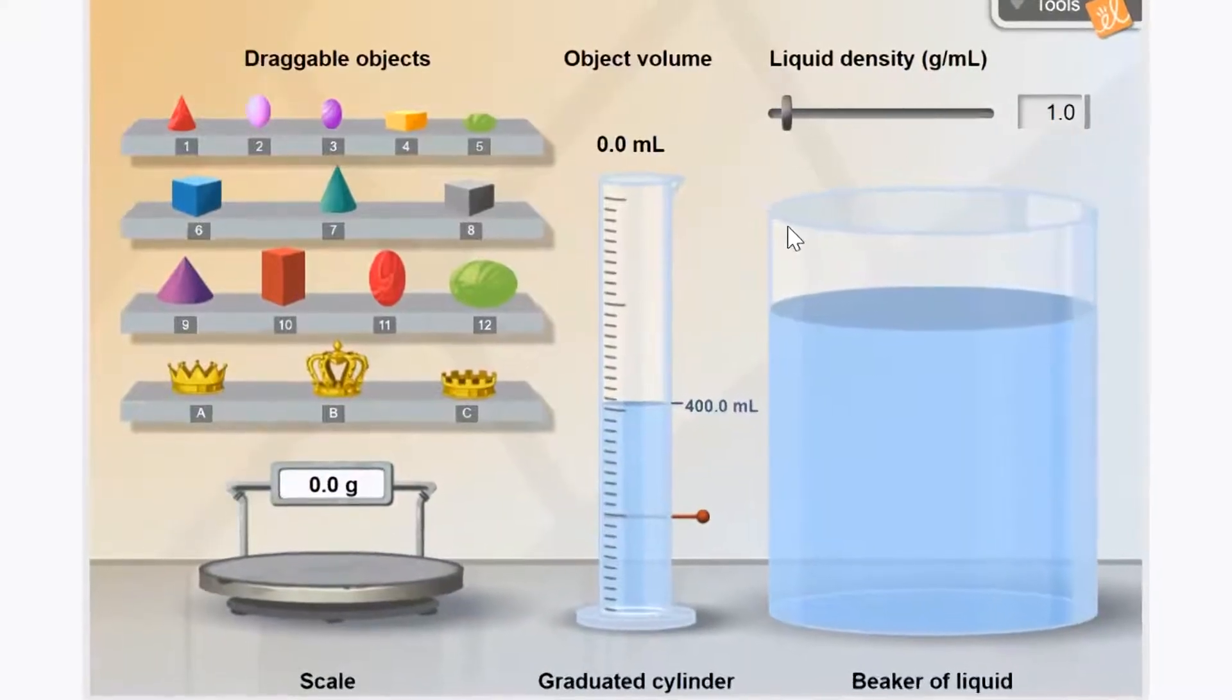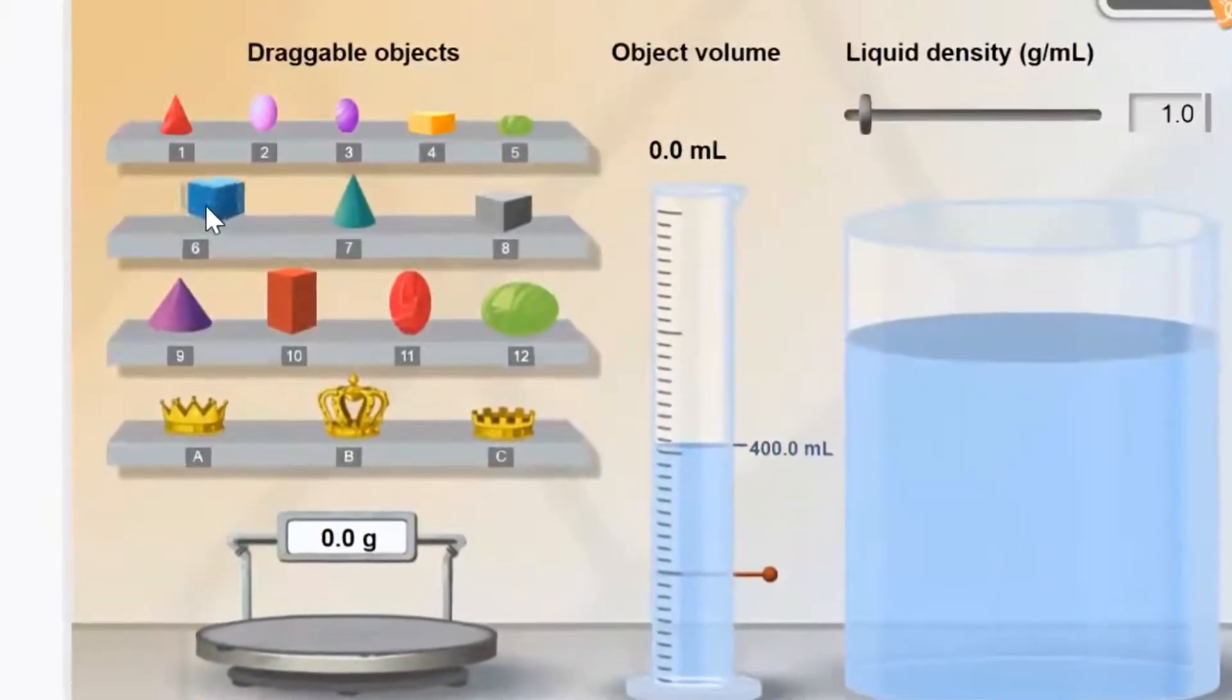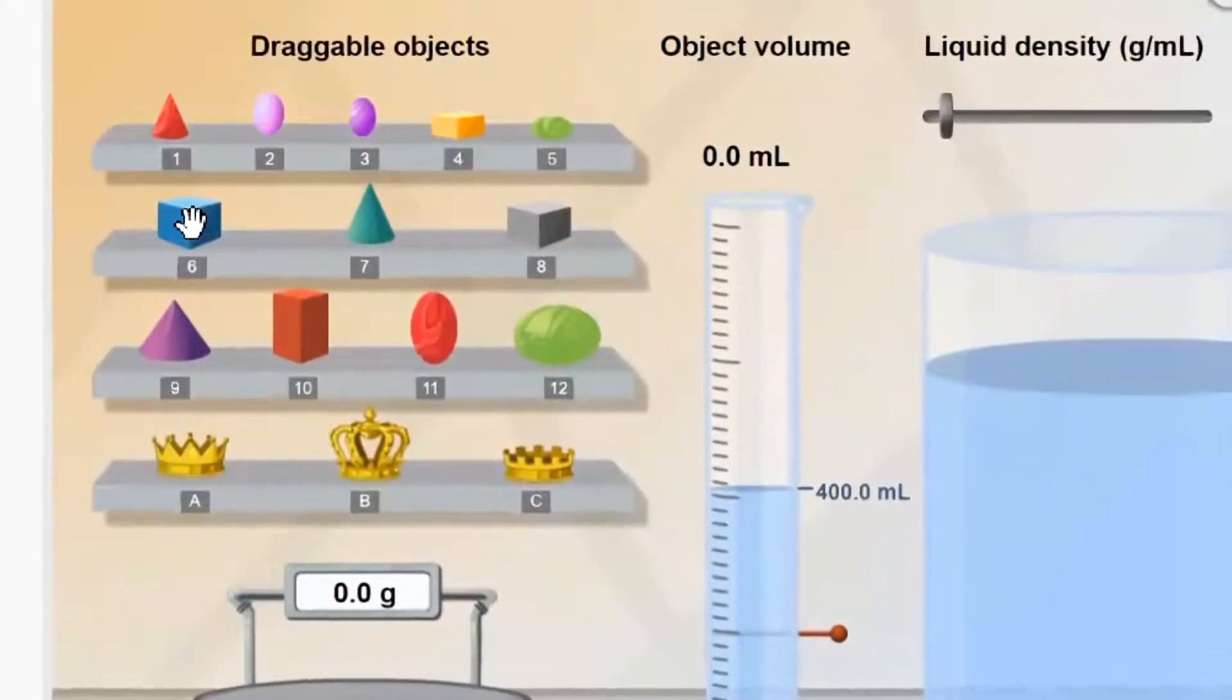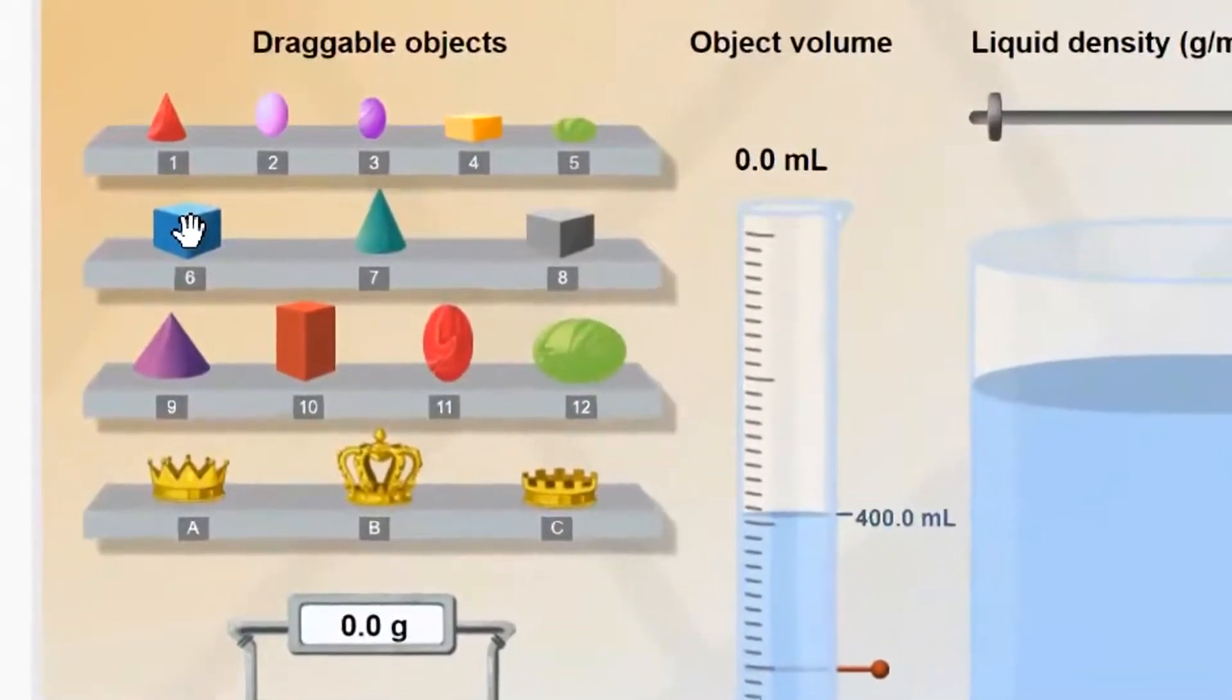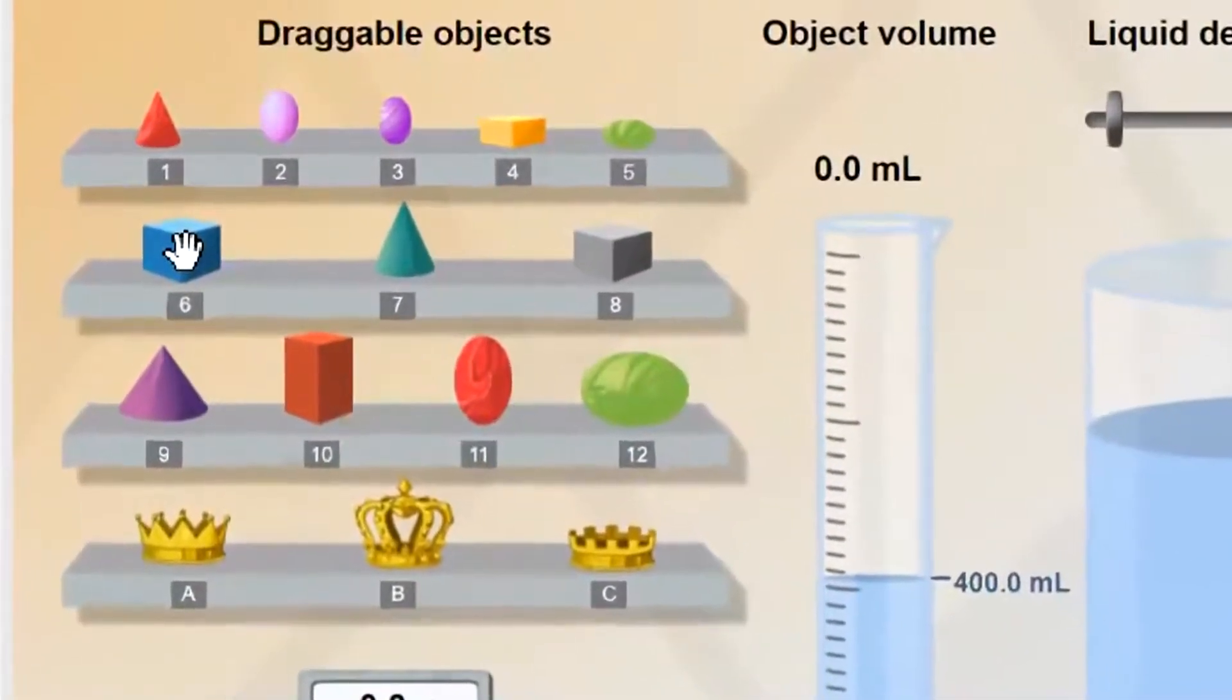Less obvious but also convenient, objects like this, solid objects, are measured in cubic centimeters. That is, we measure how high something is, how wide something is, and how deep something is in centimeters, and it's centimeters times centimeters times centimeters, so we say centimeters cubed.